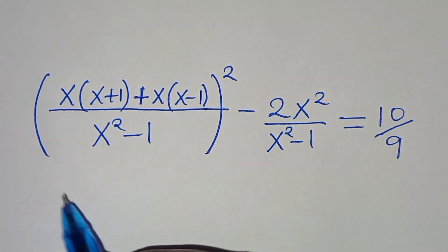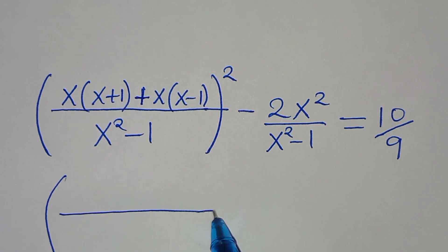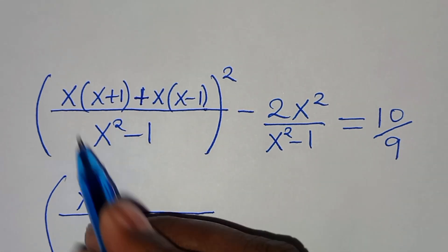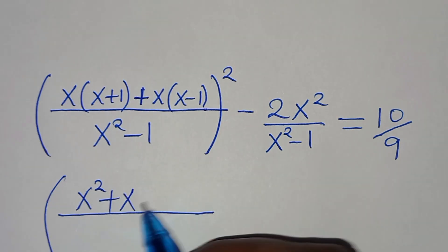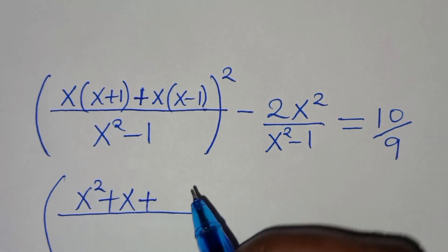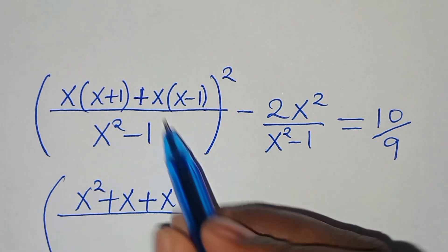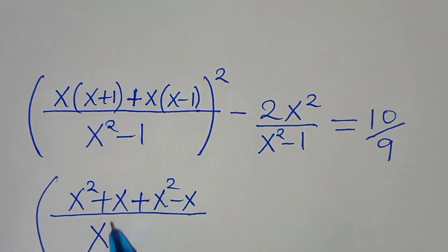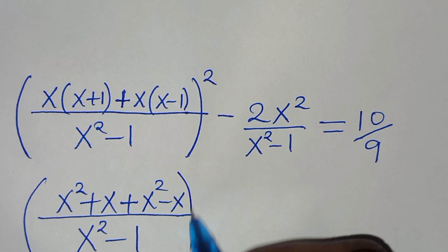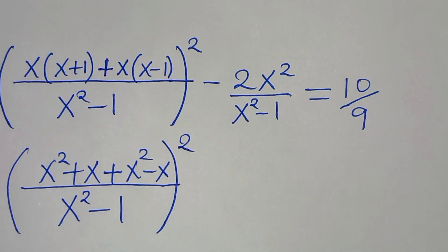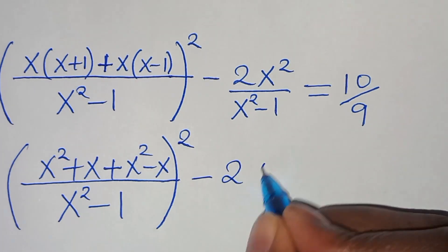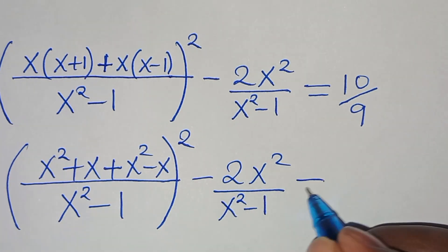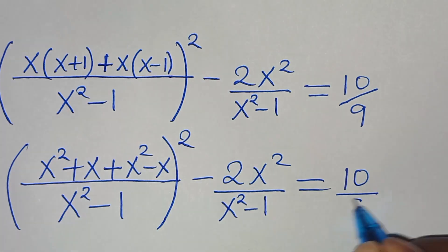In the numerator: x·x = x², x·1 = x, x·x = x², x·(-1) = -x. So the numerator is x² + x + x² - x = 2x². Then everything is divided by x²-1, all squared, subtract 2x²/(x²-1), equals 10/9.